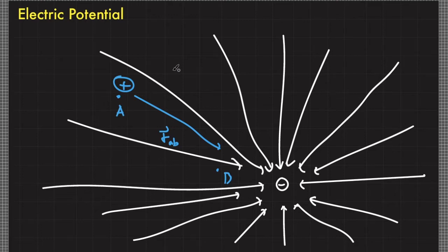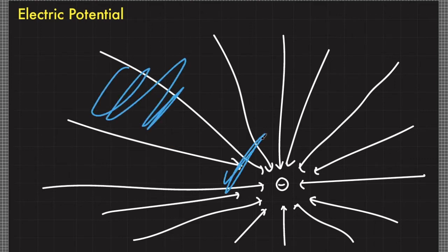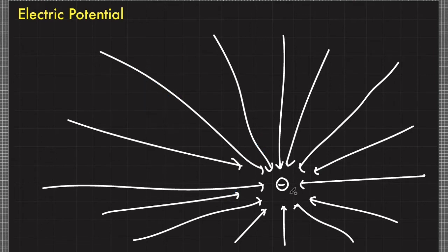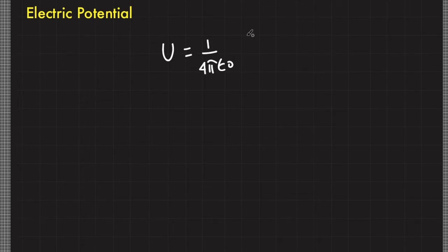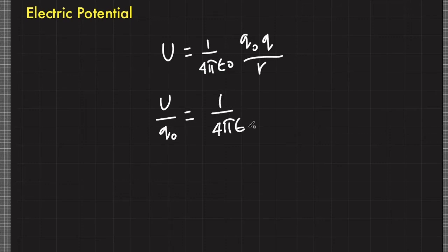Just like the concept of electric field, if we remove the test charge, we know that this region is different from a region closer to the source charge even without a test charge. With this, we modify our equation for electric potential energy. If we remove the test charge from the electric potential energy expression, we now have a new expression, and we call it electric potential.